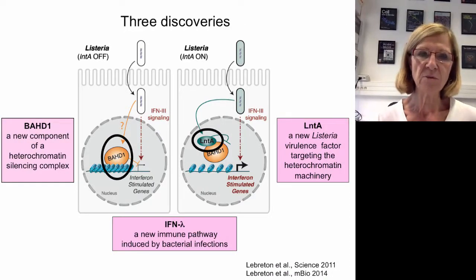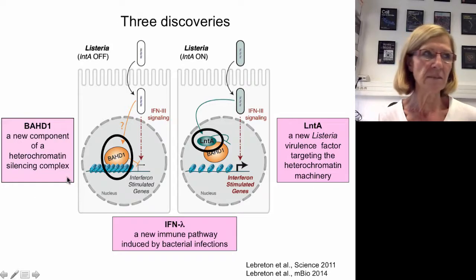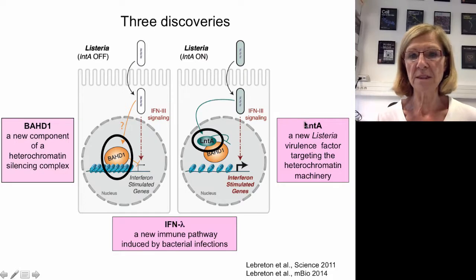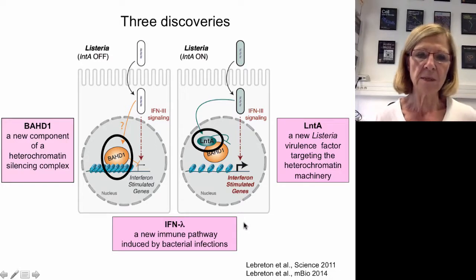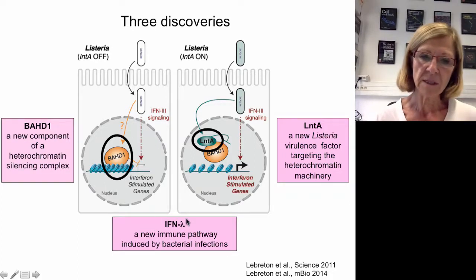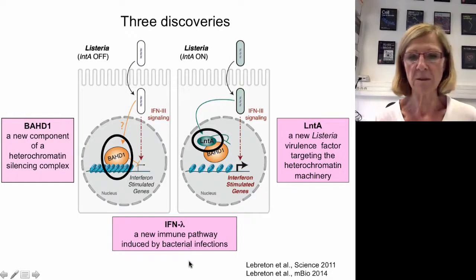This study led to three discoveries: first, BAHD1 as a new component of the heterochromatin silencing complex; second, LNTA as a new Listeria virulence factor targeting the heterochromatin machinery; and third, Listeria in epithelial cells induces a strong interferon lambda response — a new immune pathway induced during bacterial infection, which we have also shown occurs in other bacterial infections.